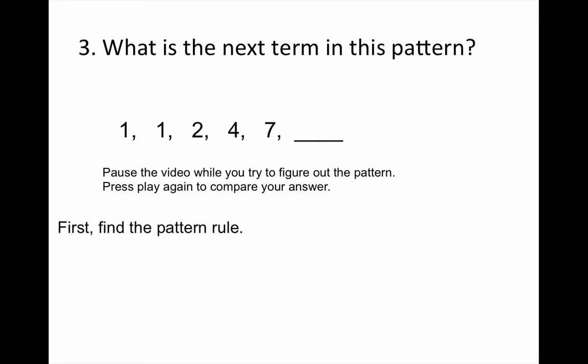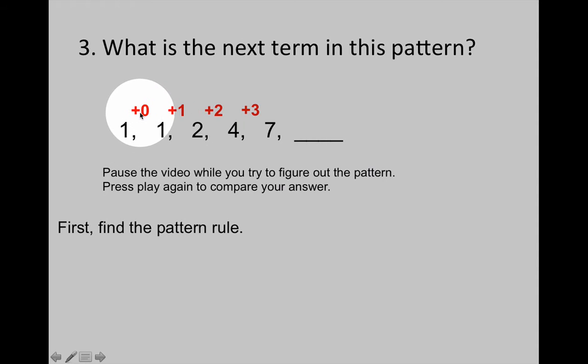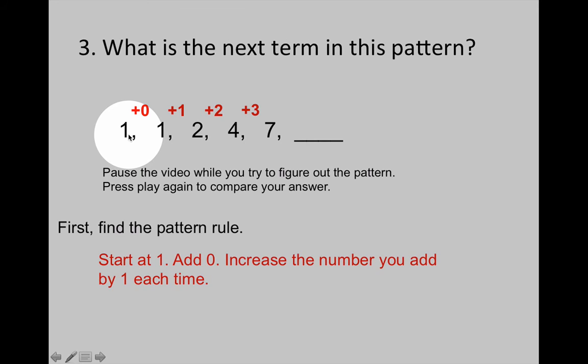First, find the pattern rule. 1 plus 0 makes 1. 1 plus 1 makes 2. 2 plus 2 makes 4. 4 plus 3 makes 7. You see the pattern emerging. We start at 1. Add 0. And we increase the amount we add by 1 each time.